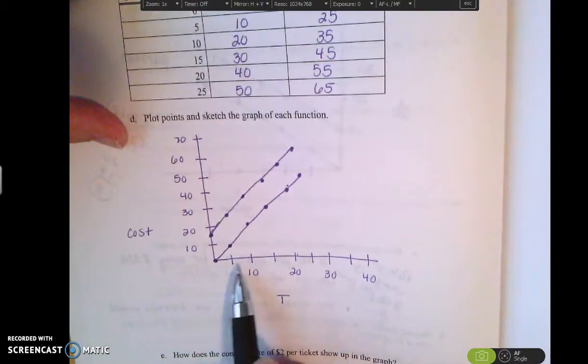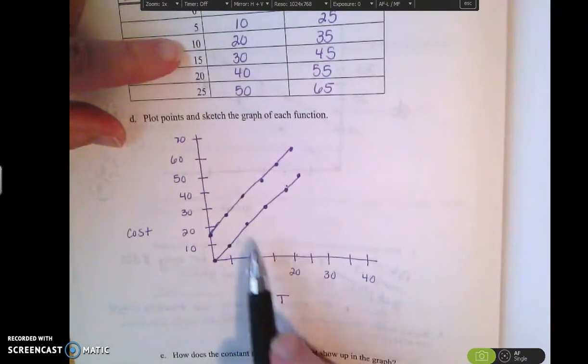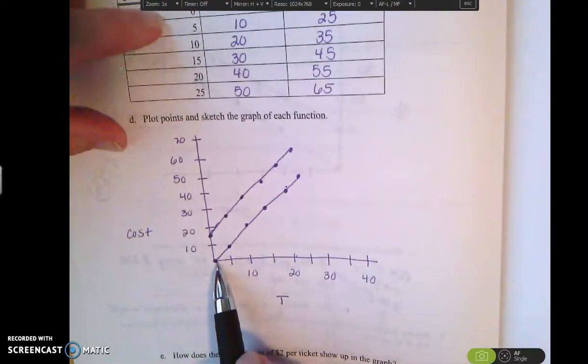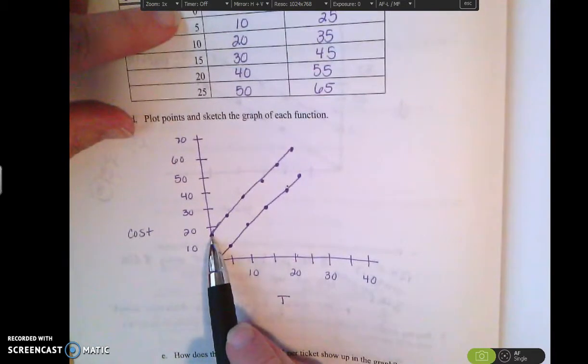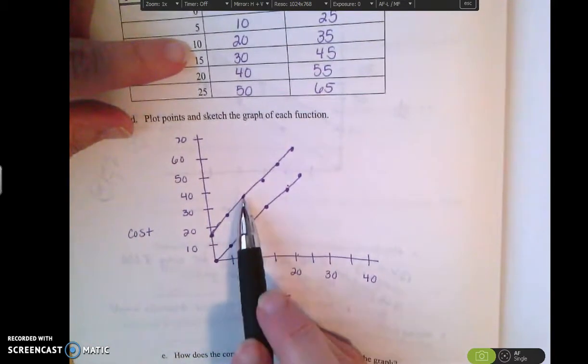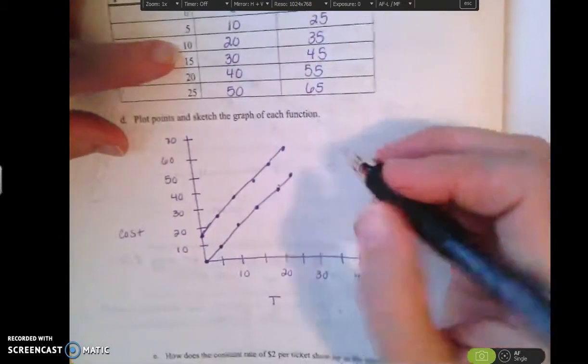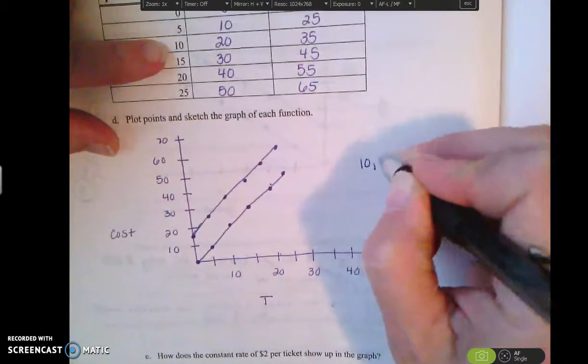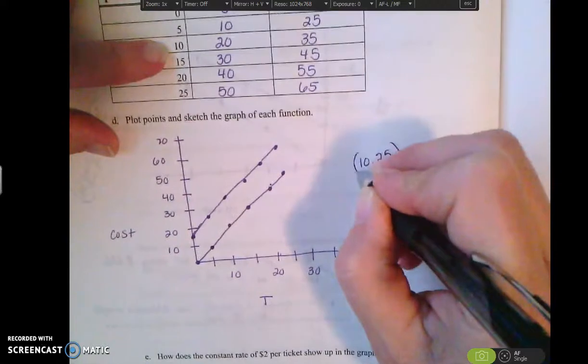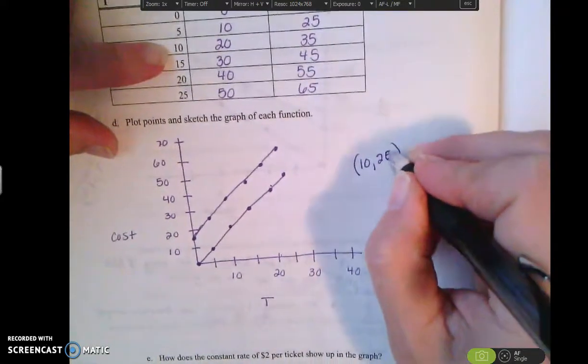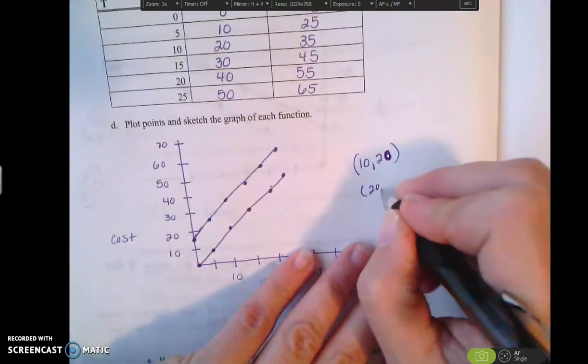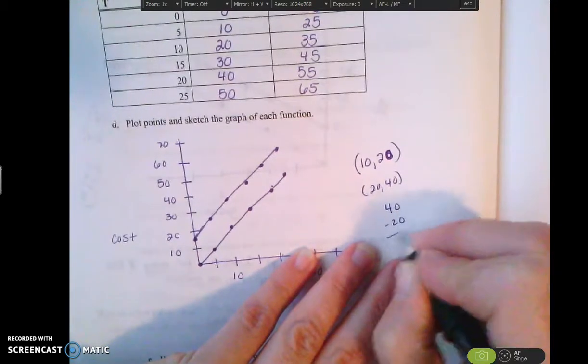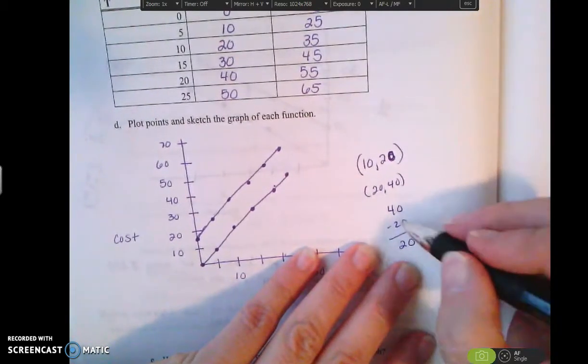So again, 0, 0. And then I have at 10, it went up to 20. At 20, it went up to 40. Or if I look at the other one at 0, it was at 15. At 10, it was at 35. And I can keep doing that. So again, at 10, I was at 20. And at 20, I was at 40. So what is the change between those two? It's a rate of change of 20.